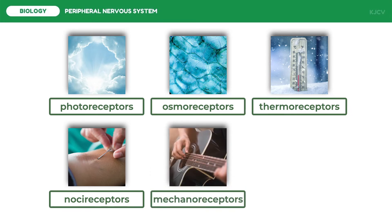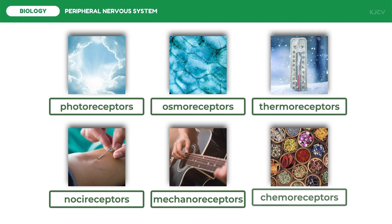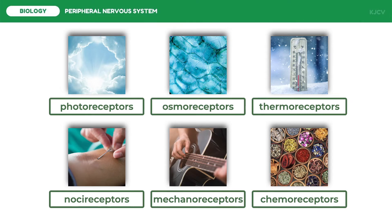Mechanoreceptors are sensitive to mechanical energy. Examples include skeletal muscle receptors sensitive to stretch, the receptors in the ear containing fine hairs that are bent as a result of sound waves, and blood pressure monitoring baroreceptors. Lastly, chemoreceptors are sensitive to specific chemicals. Chemoreceptors include the receptors for taste and smell, as well as those located within the body that detect oxygen and carbon dioxide concentrations in the blood or the chemical content of the digestive tract.